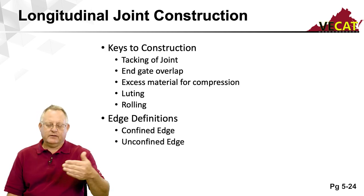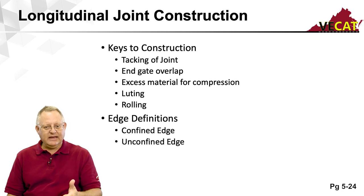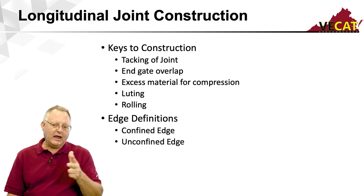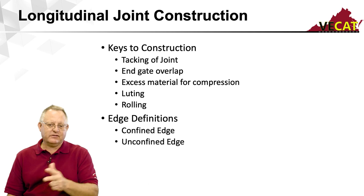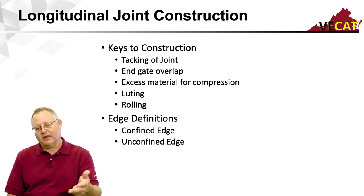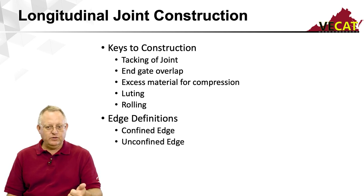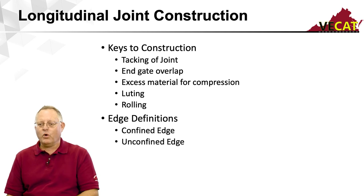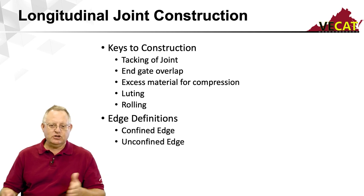For longitudinal joints, the key considerations are: Are we tacking the joint? Do we have the end gate down with proper overlap? Do we have excess material at the joint for compaction? We don't want to starve the joint — not enough material means not enough compaction and a shorter joint life. Proper luting at the joint is also important. A lot of things need to happen before rolling begins.